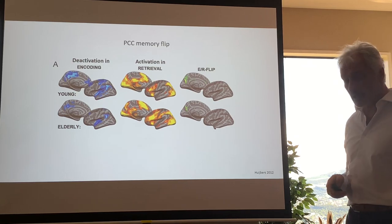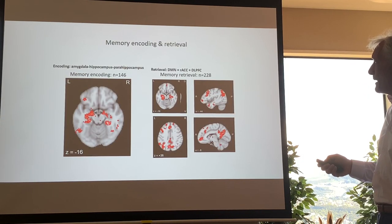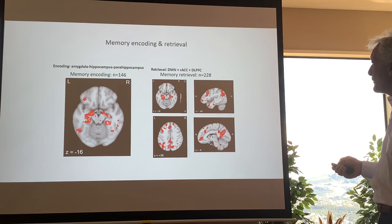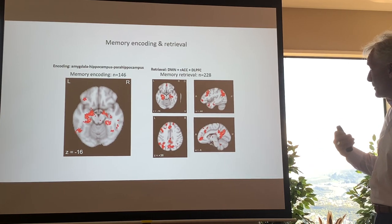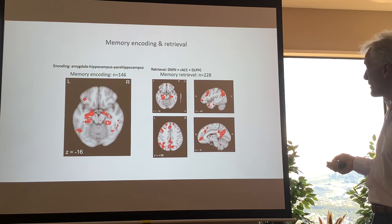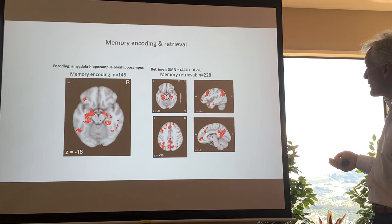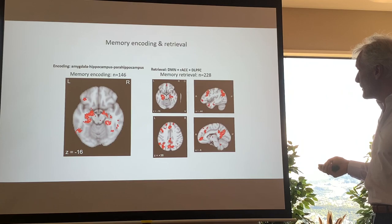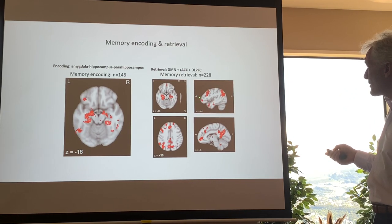Memory encoding involves the parahippocampal area extending into the hippocampus and amygdala. When you retrieve memory, you pull it via the posterior cingulate into what you can clearly recognize as the entire default mode network. Associated with that is the rostral part of the anterior cingulate, which is involved in salience detection — salience determines what you will pull from contextual memory. This is then processed in the dorsolateral prefrontal cortex and the superior parietal area, your central executive or working memory component.